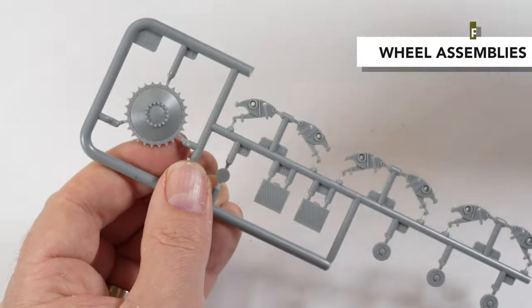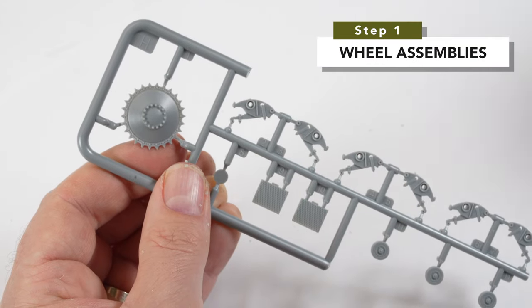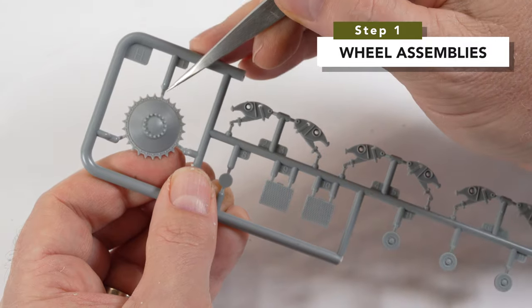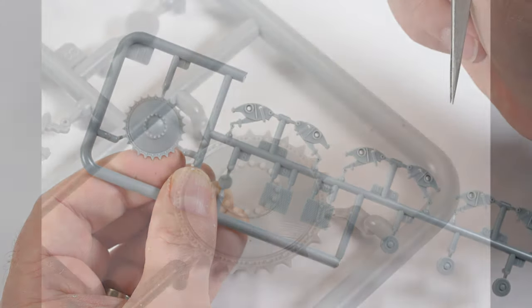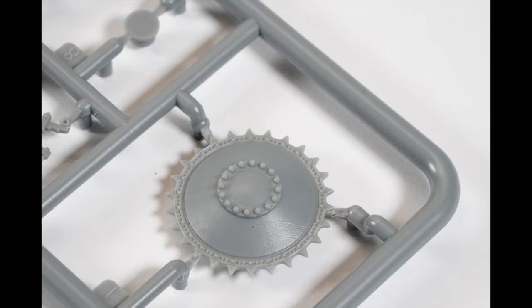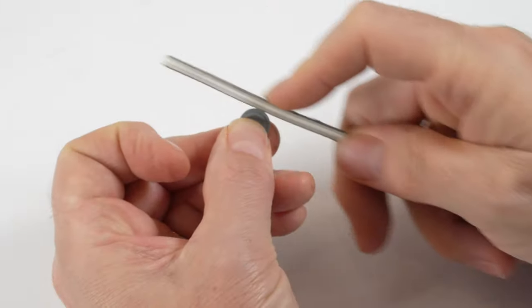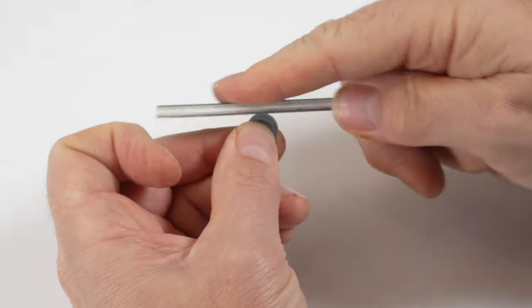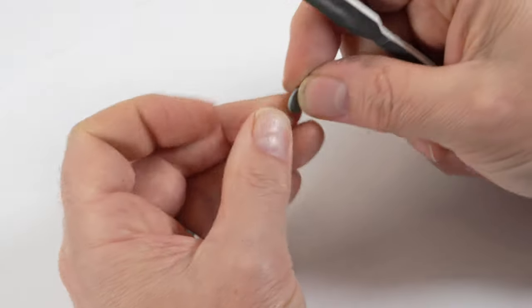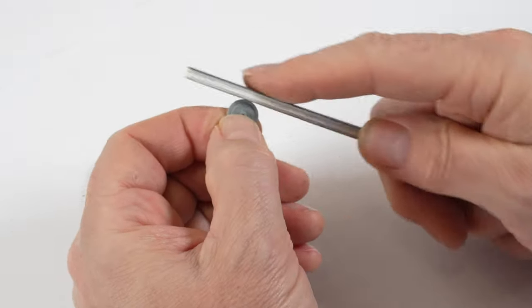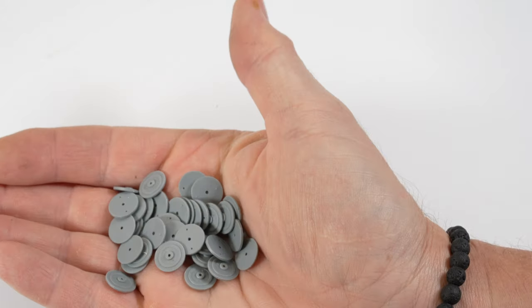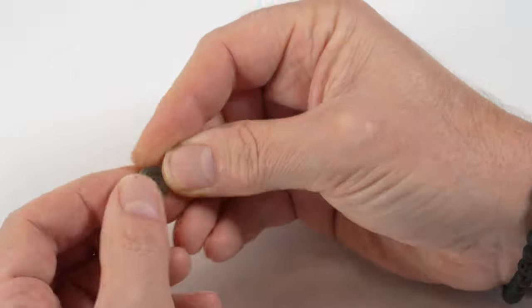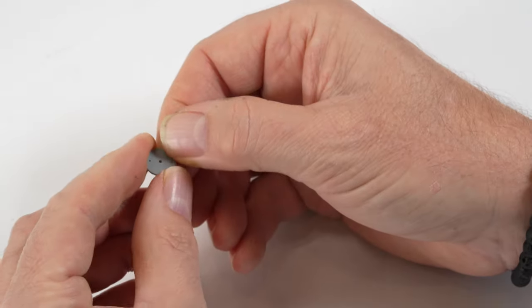Construction began with the wheel sections and care was required to remove the drive sockets from the sprues because the gates were attached to the teeth. It would be very easy to accidentally remove the detail in that part. The wheel sections are removed from the sprues and lightly sanded just to remove any lumps and bumps. The plastic is very soft and was very easy to sand flat spots to the wheels, so caution is required at this stage.